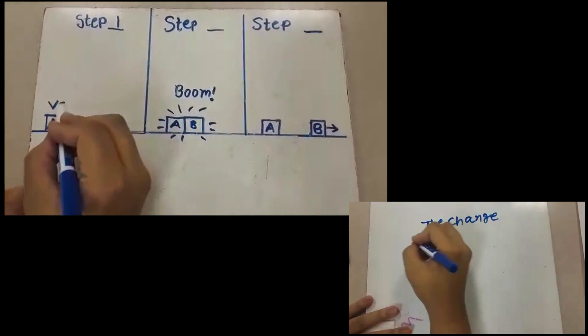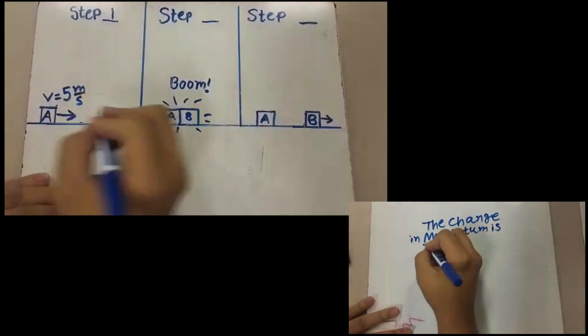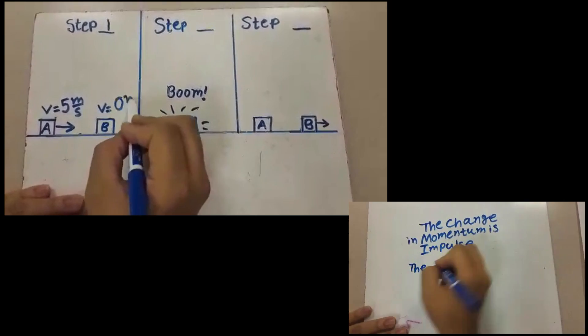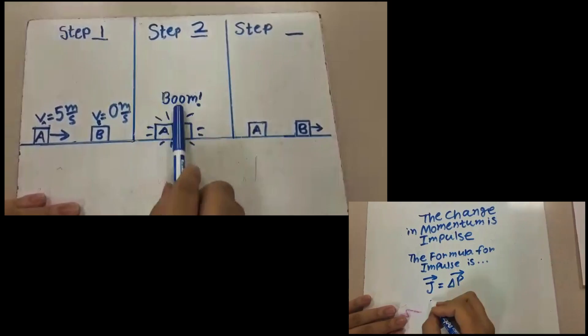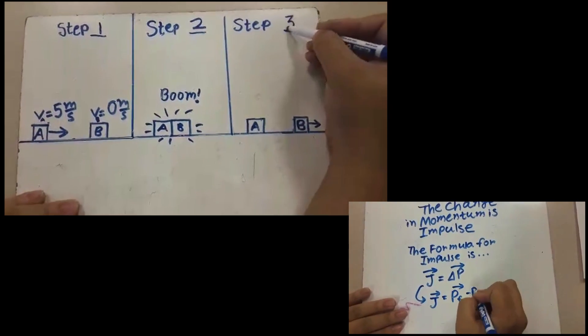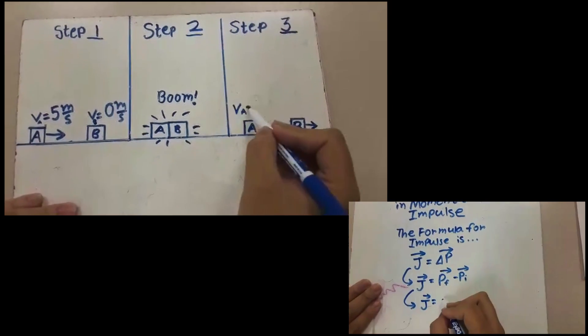When object A collides with object B, object A slows down, decreasing its momentum. But object B will accelerate in the direction object A was moving in. This is because some of object A's momentum is transferred to object B. This transferred momentum is called impulse.